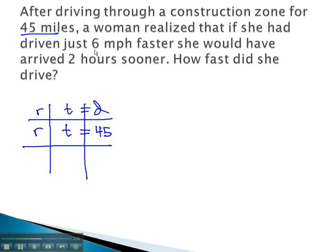She then realized that if she had driven 6 miles per hour faster, this means she is increasing her rate by 6, r plus 6. She would have arrived 2 hours sooner. This is our time, minus 2, equals the distance. She is still considering the same distance she actually traveled, and so that distance is still 45.